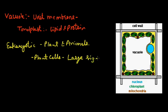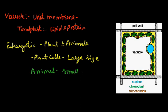In the case of animal cells, vacuoles are present in very high numbers and are small in size. Their size is very small in the case of animal cells.